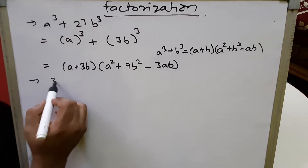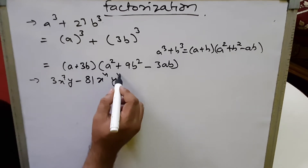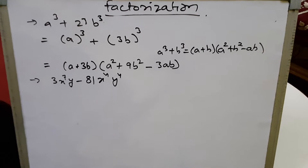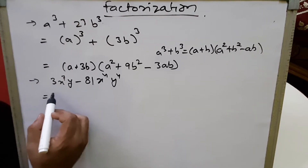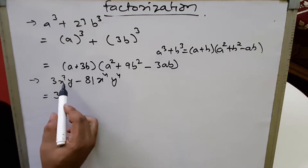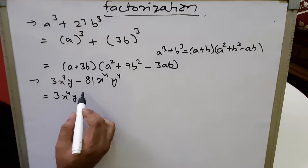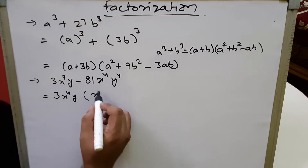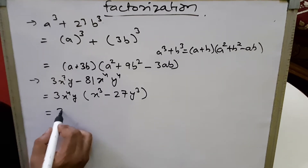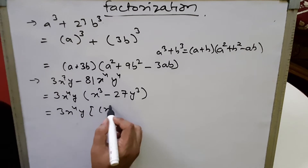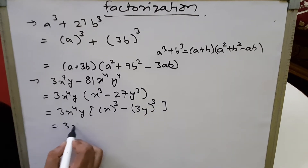The next sum is 3x⁷y - 81x⁴y⁴. First, we take common factors. The constants 3 and 81 have a common factor of 3. For x⁷ and x⁴, the common factor is x⁴. For y and y⁴, y is common. After taking out 3x⁴y, what remains inside is x³ - 27y³.